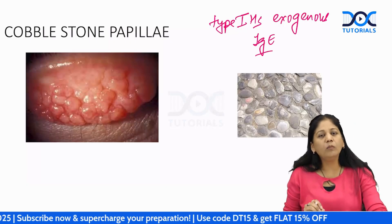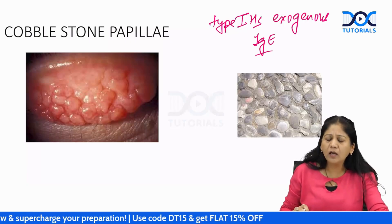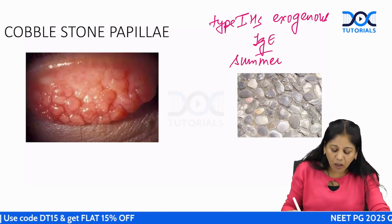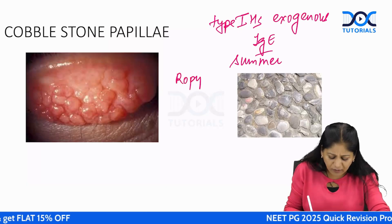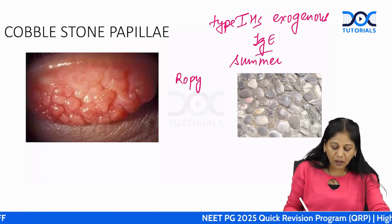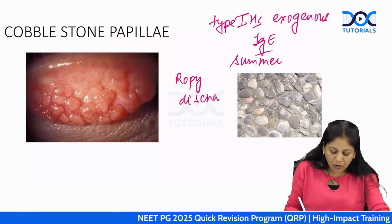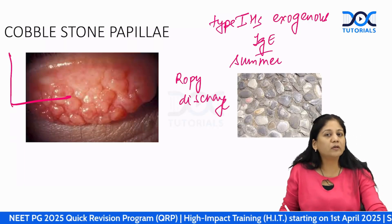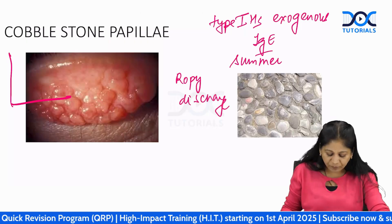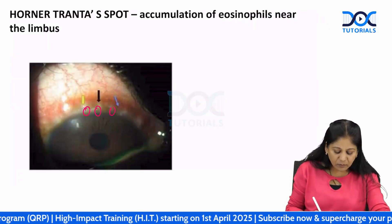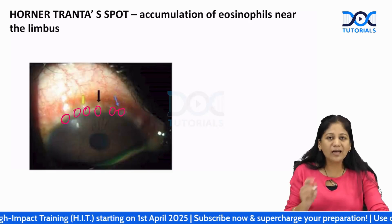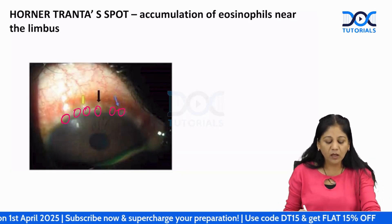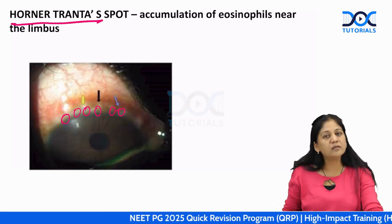In VKC, we see a small boy in his first decade with frequent itching in summer months and a ropy discharge — a very thick kind of discharge. We also see large cobblestone papillae. We classically see small elevated lesions near the limbus in boys called Horner-Tranta spots.